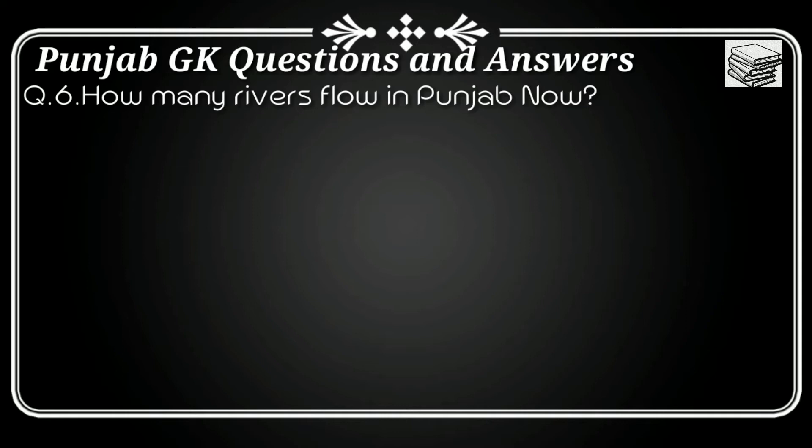Question number six: How many rivers flow through Punjab now? The answer is three rivers currently flow through Punjab.